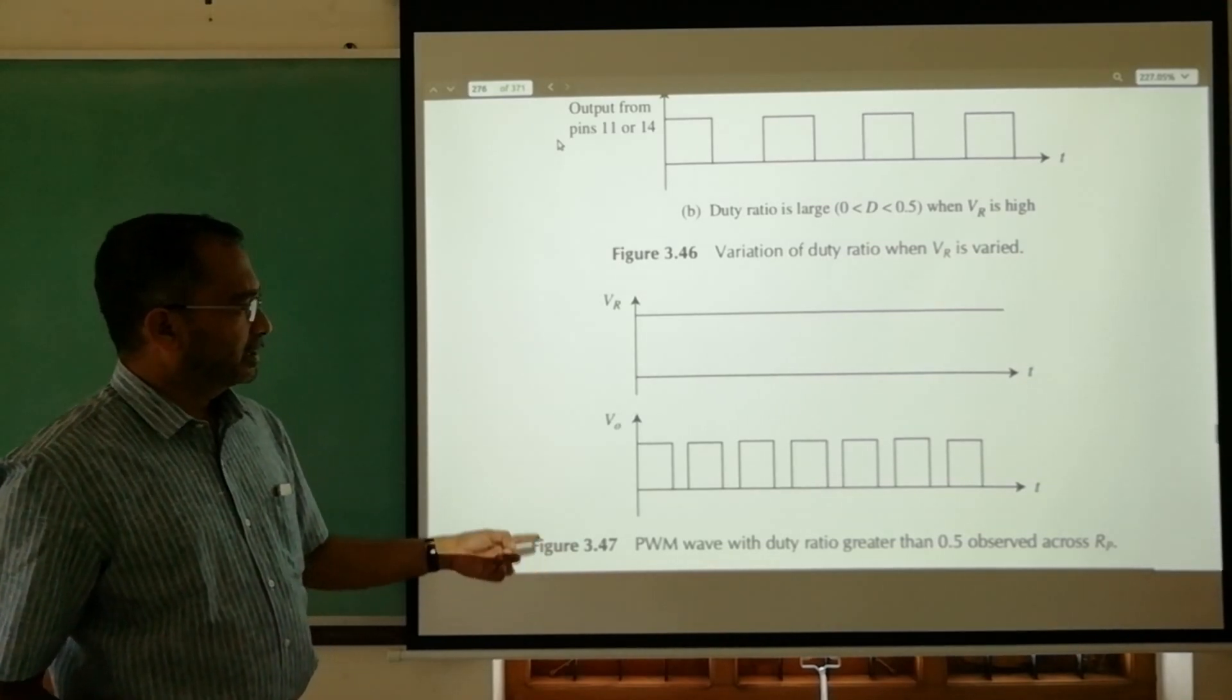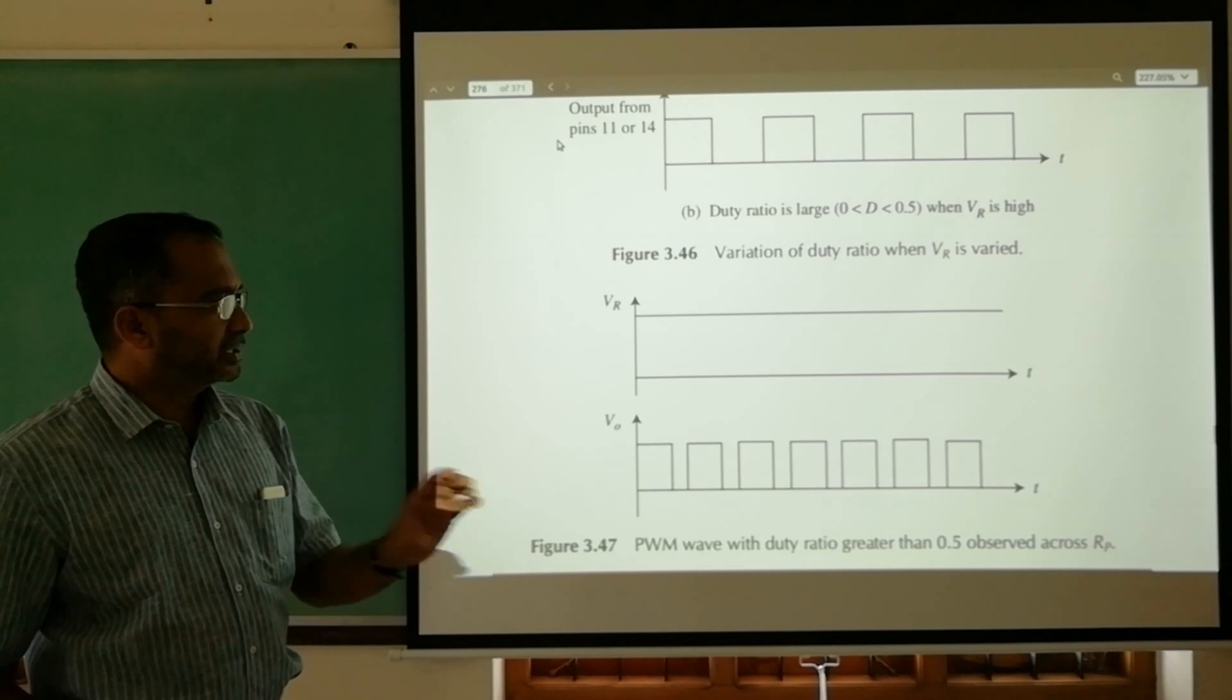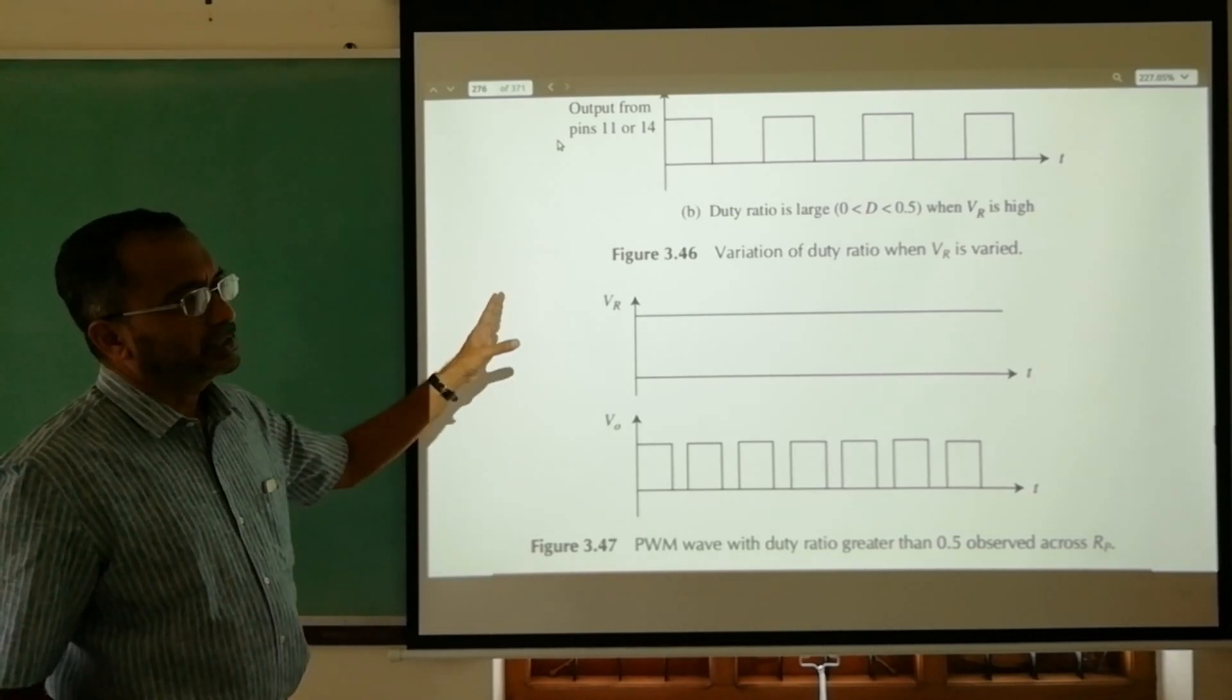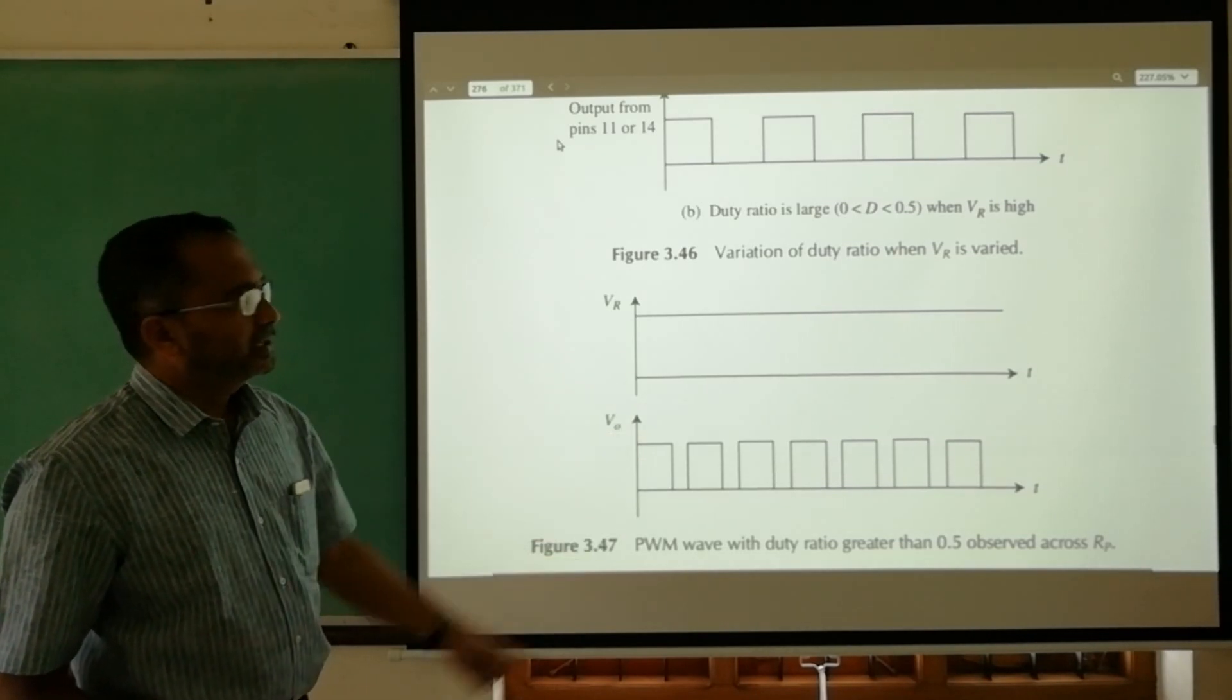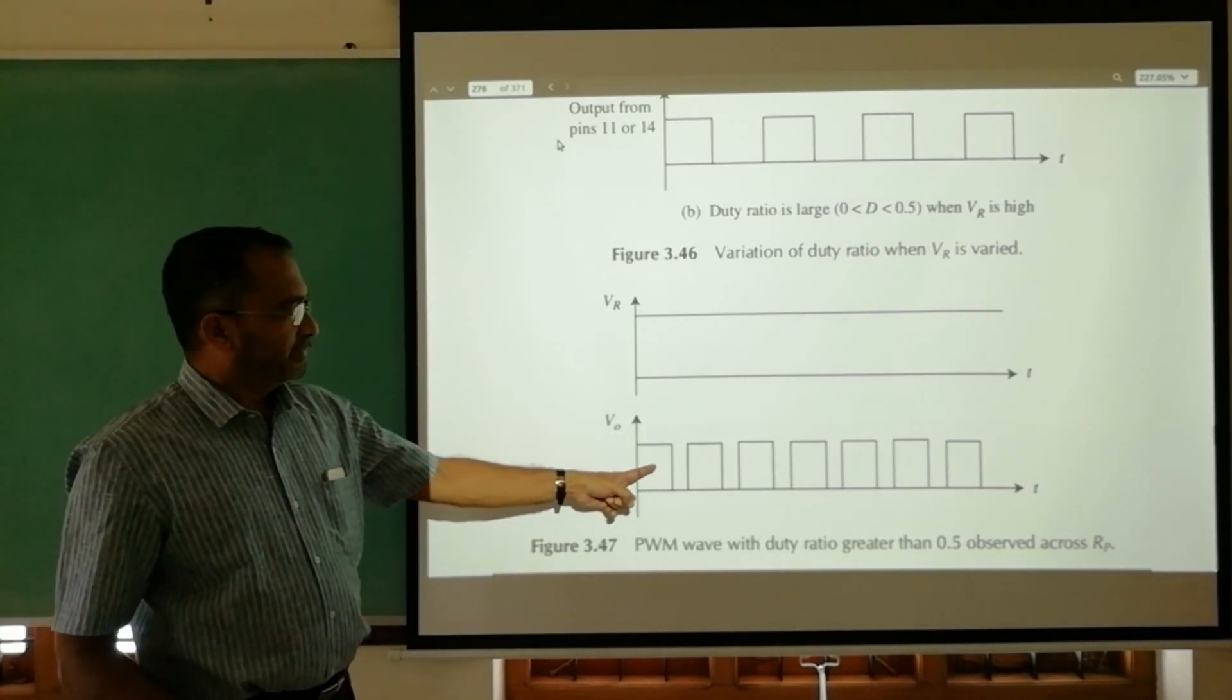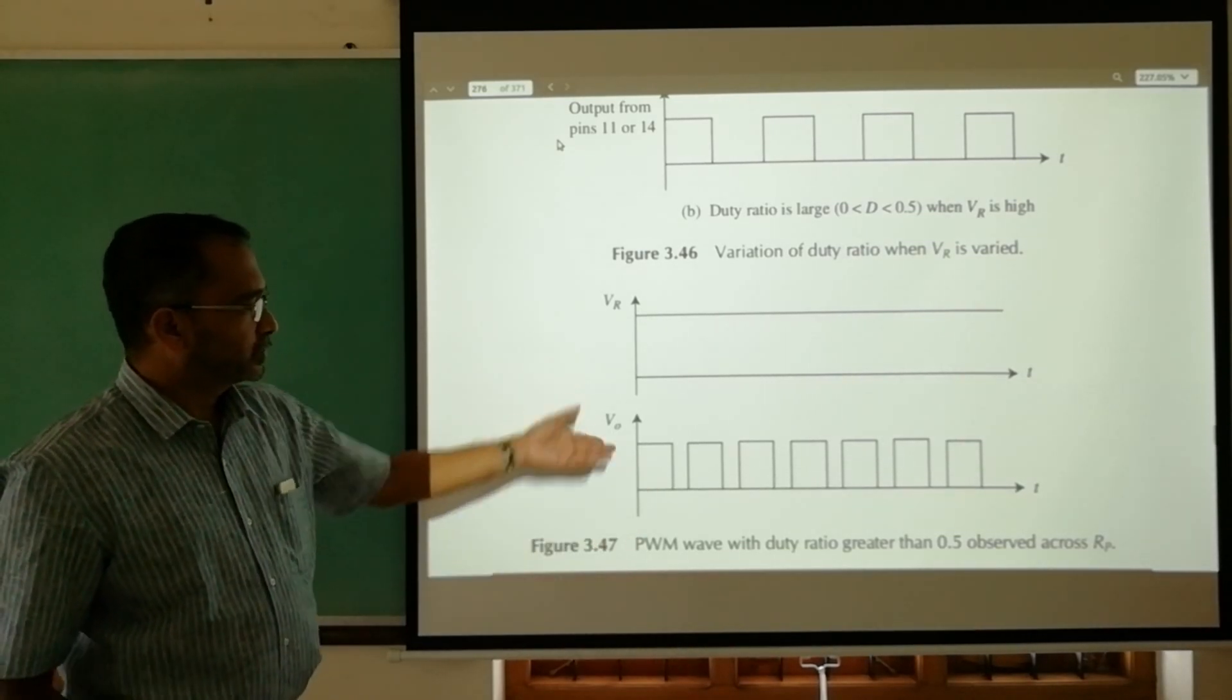When we use that diode resistor network at the output of IC3525, this is the output of the modified circuit. You can get a single waveform with greater than 0.5 duty cycle. When it is required, we can use this.